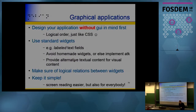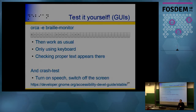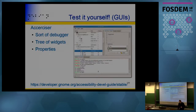Some quick takeaways: design logically without focusing on visual layout, use standard widgets, use label widgets, ensure real logical relationships, and keep it simple. You can try enabling a screen reader and navigating by keyboard only to see what happens. Check what appears on a Braille device, and use the accessibility debugger to inspect the widget tree.